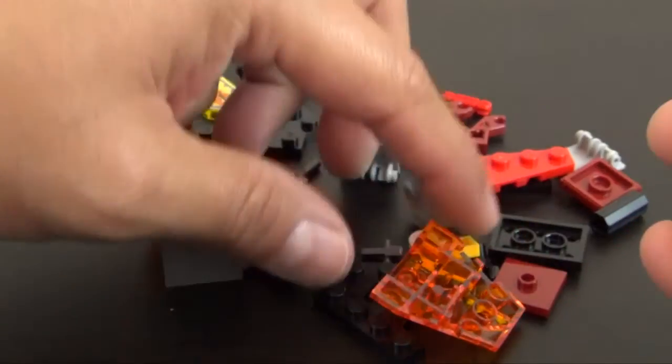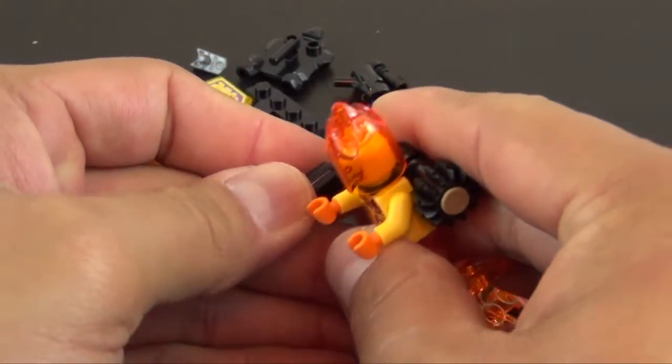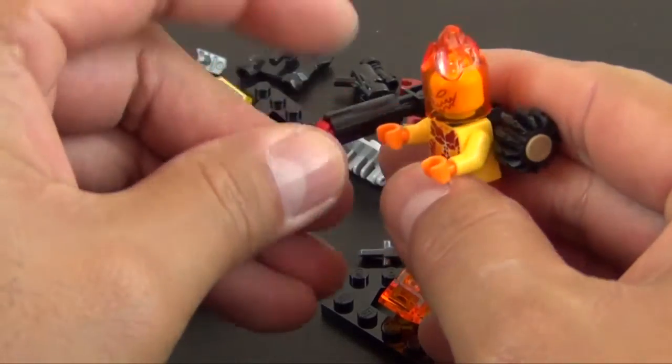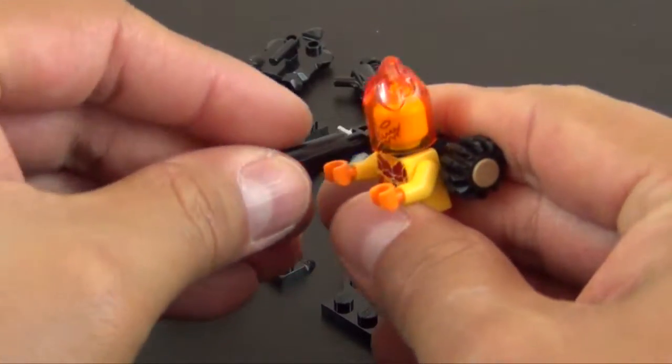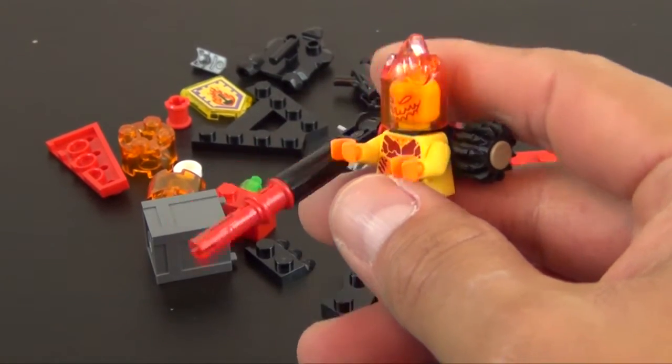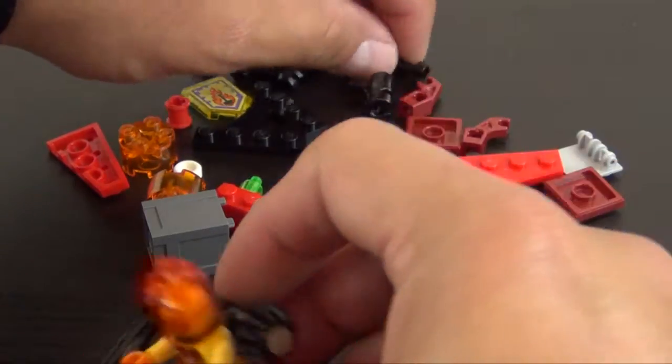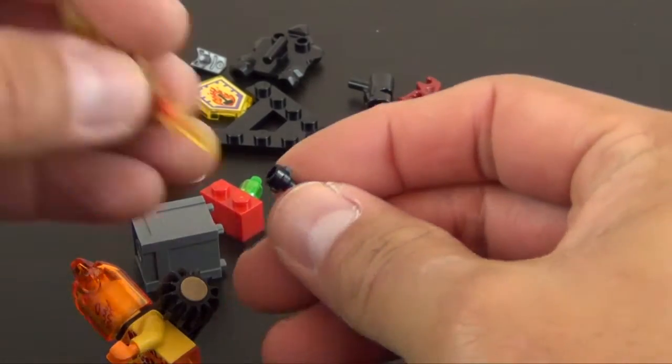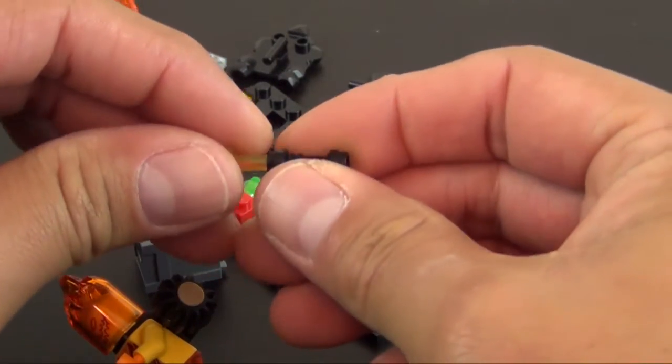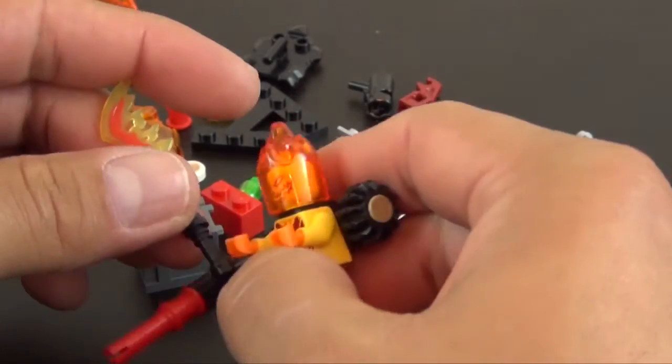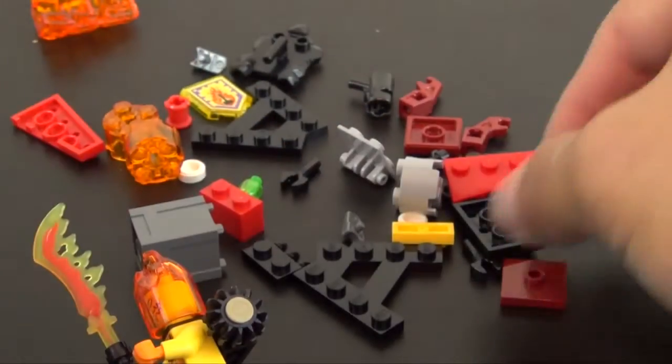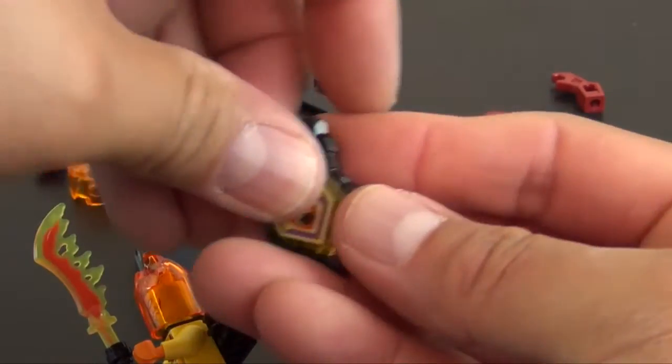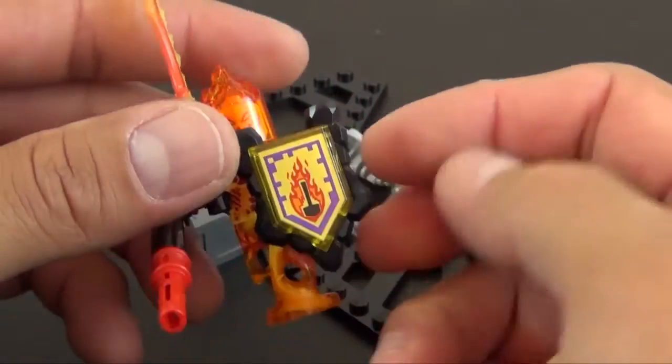And then right here we're going to attach a little accessory piece. We have the lightsaber handle with a flaming sword. And then we have our nexo shield with the flaming nexo tile on there.